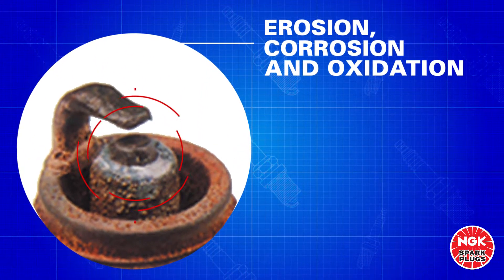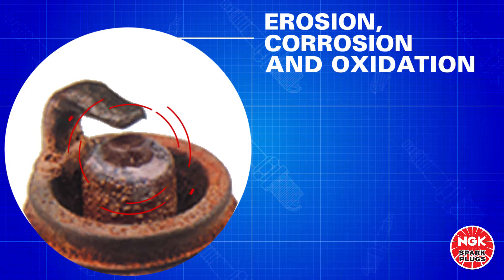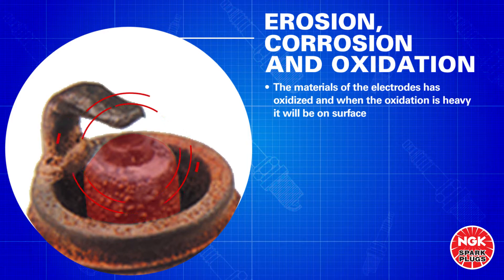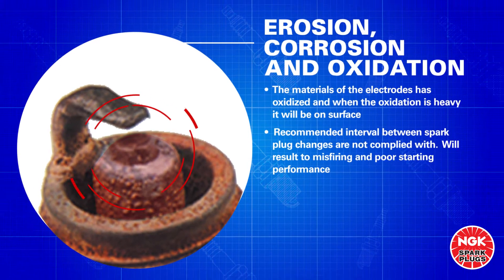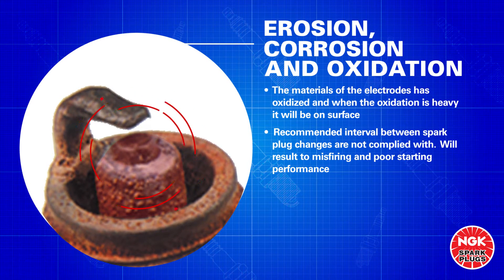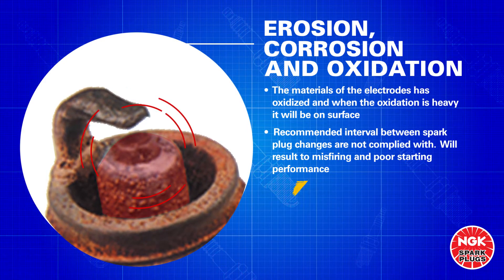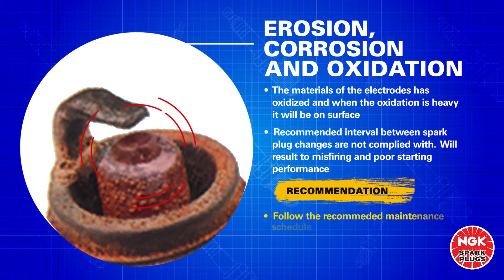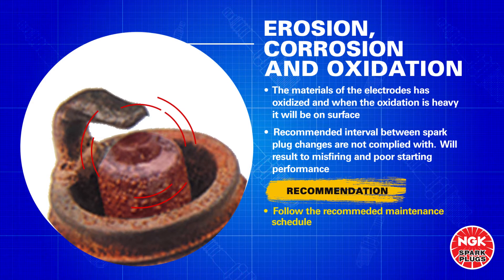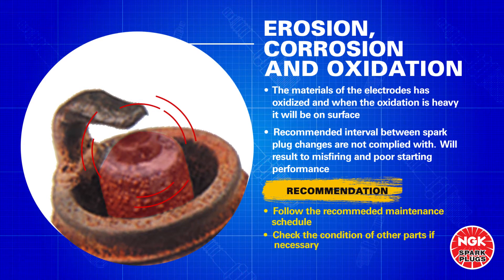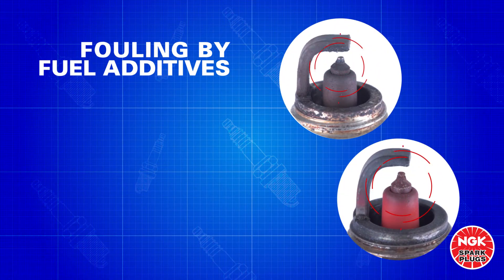Erosion, Corrosion, and Oxidation. The materials of the electrodes have oxidized, and when the oxidation is heavy, the surface will be green. The surface of the electrodes are also fretted and rough, which will result in misfiring and poor starting performance. Follow the recommended replacement interval of the spark plug between changes. Check the condition of other parts and replace if necessary.